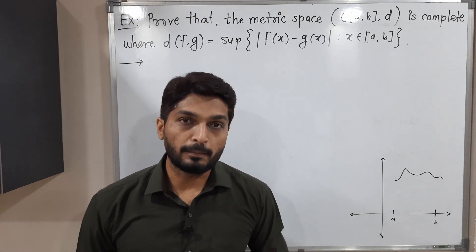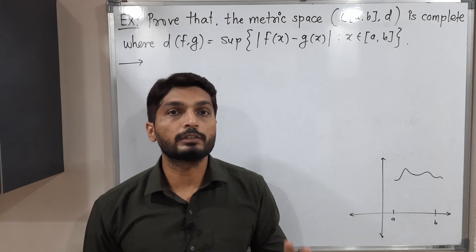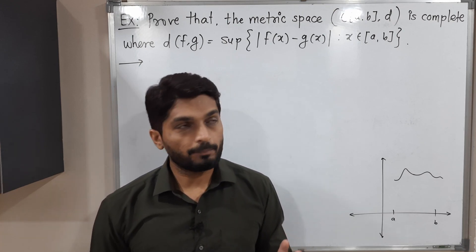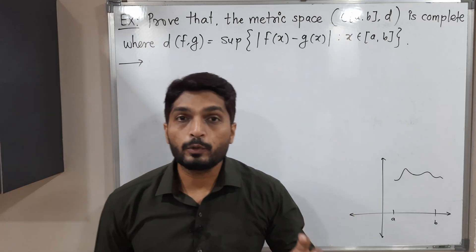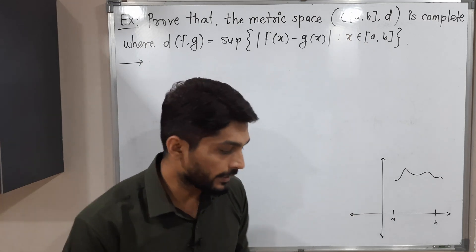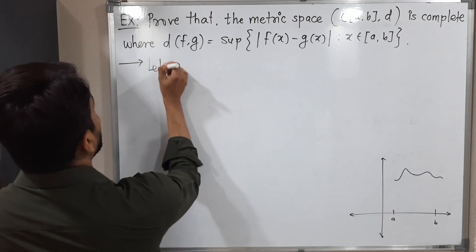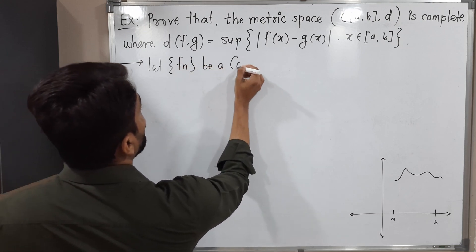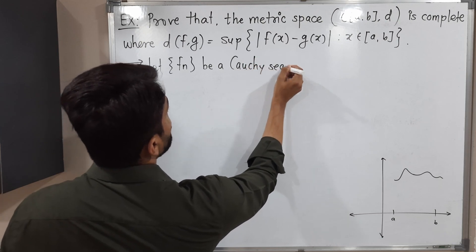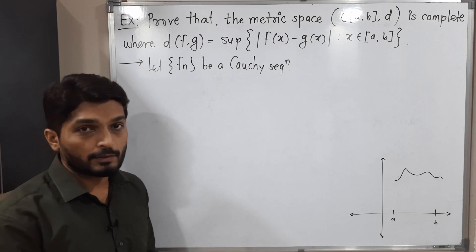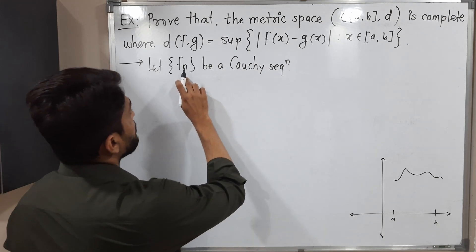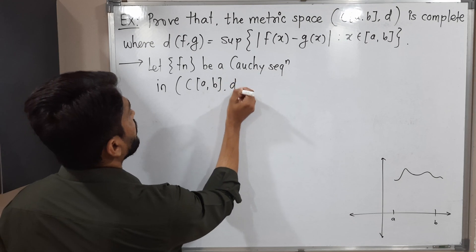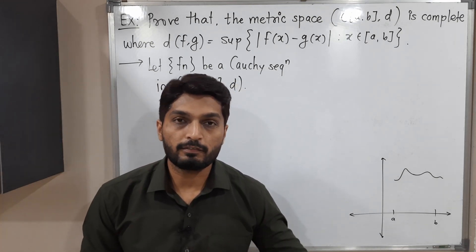Let us recall when we say the metric space is complete: if every Cauchy sequence is convergent, then we say it is complete. So here also we have to prove every Cauchy sequence is convergent in this metric space. I will take any arbitrary Cauchy sequence and prove that it is convergent. So let {f_n} be a Cauchy sequence in C([a,b], d). We have to prove that it is convergent. This is our final target.